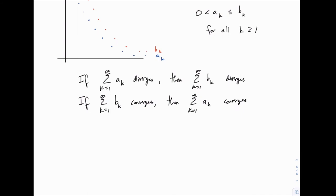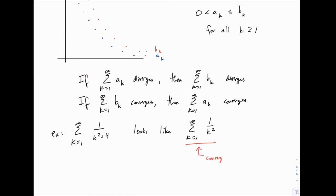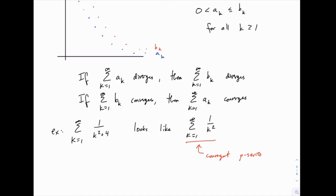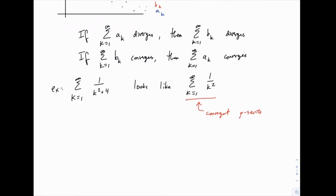Let me show you an example we've already introduced. If we want to know whether the series 1 over k squared plus 4 converges or diverges, we notice first that it looks like 1 over k squared. Adding 4 in the denominator doesn't seem like a dramatic enough change to turn this from converging to diverging. So our intuition is that 1 over k squared plus 4 probably converges because it's like a convergent p-series. But to use the direct comparison test to prove that, we need to show that 1 over k squared plus 4 is below 1 over k squared — if it's above, the test tells us nothing.